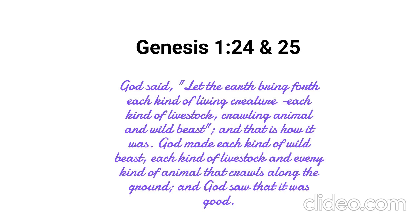God said, 'Let the earth bring forth each kind of living creature, each kind of livestock, crawling animal, and wild beast,' and that is how it was. God made each kind of wild beast, each kind of livestock, and every kind of animal that crawls along the ground, and God saw that it was good. At the start of the sixth day, God created all of the animals. We see that God created all of the different kinds and said that it was good. That reminds us that God loves diversity in life and that all things have a God-given purpose, even those animals that we do not like and consider to be pests. The same goes for people and we should not condemn what God has called good. All life has a God-given purpose and is precious in His sight.